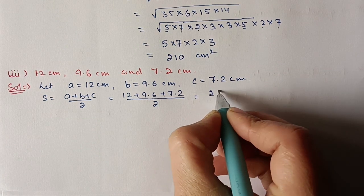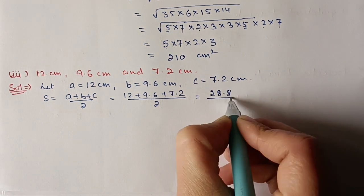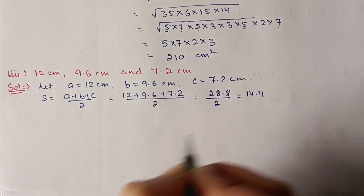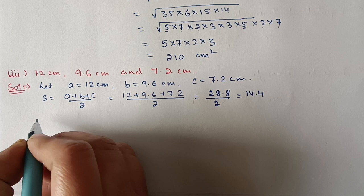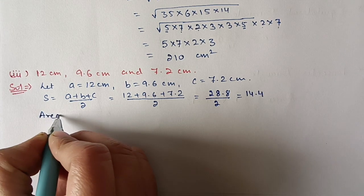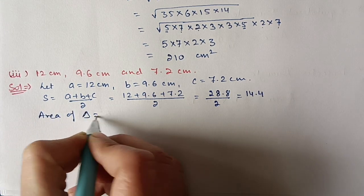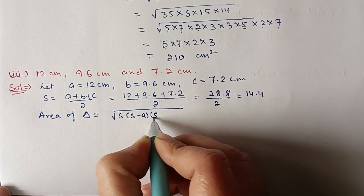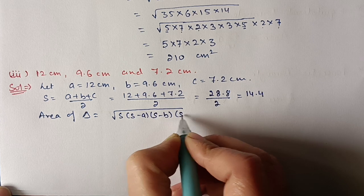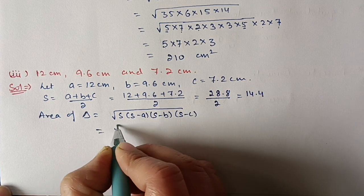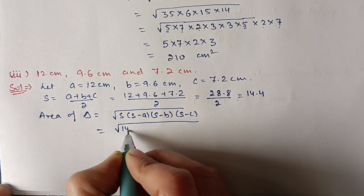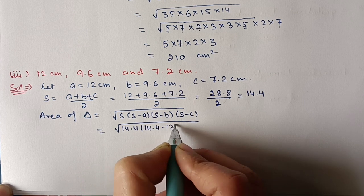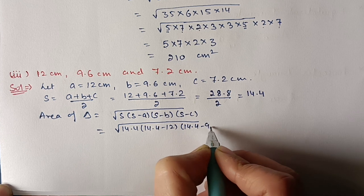Now apply Heron's formula: area = √[s(s−a)(s−b)(s−c)]. Substituting: s = 14.4, s−a = 14.4−12, s−b = 14.4−9.6, and s−c = 14.4−7.2.